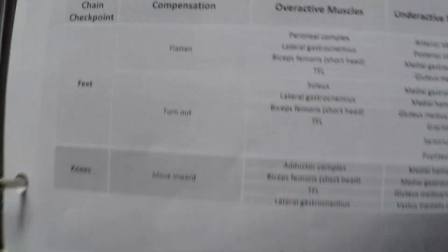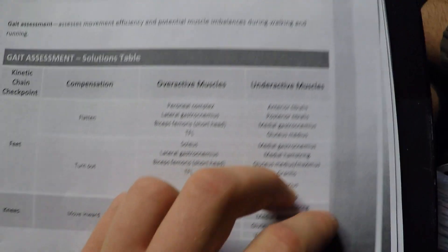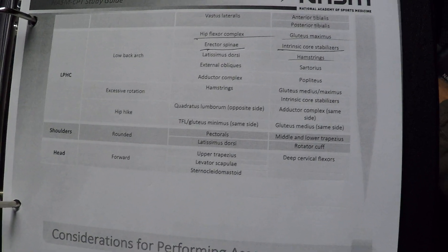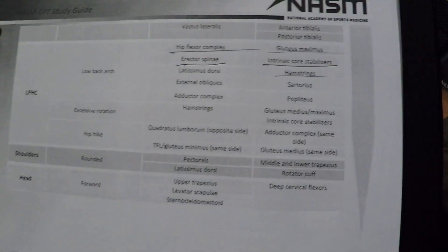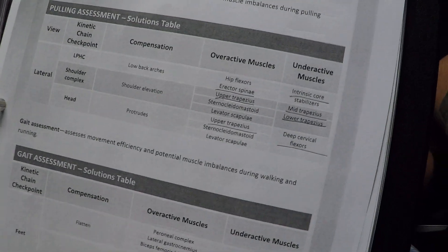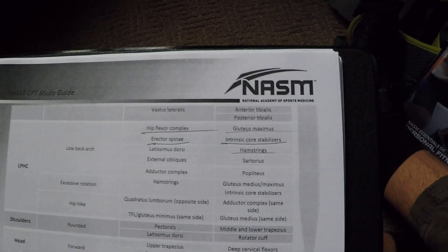For the pulling assessment, know the overactive and underactive muscles for low back arching, shoulder elevation, and head protrusion. For the gait assessment, there was a question about knees moving inward with flat feet - that one threw me. I got up and was thinking it through, doing the movements, but I couldn't figure it out and kind of guessed.